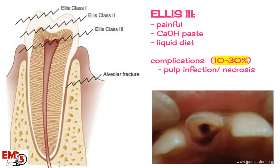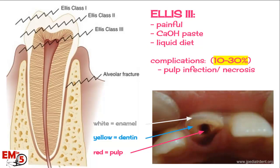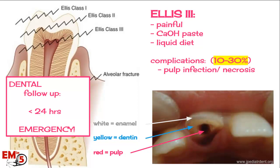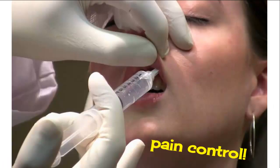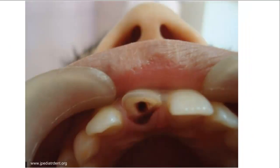Lastly is the LS3 — meaning the fracture goes all the way down to the pulp. It can be very painful, and the complication rate is much higher: 10% to 30% of these patients will go on to have necrosis. This is considered a dental emergency. There's the white enamel, then underneath the yellow dentin layer, then the red underneath — that's the pulp. If you see red, pink, or a little bleeding, you know it's LS3. Follow-up must be within 24 hours. Treatment is the same as LS2 with calcium hydroxide paste, but these patients should be on a liquid diet. These can be very painful, so consider lidocaine-soaked gauze or a dental block.